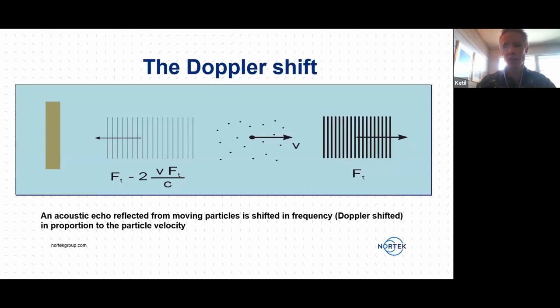This is illustrated here. So that pulse, as it hits particles that are always present in the water, some of the energy will be reflected back to the instrument. And if those particles move either away from or towards the transducer, then the sound will come back with a different frequency from what was sent out. This is what we call the Doppler shift, and it's exactly what we measure.